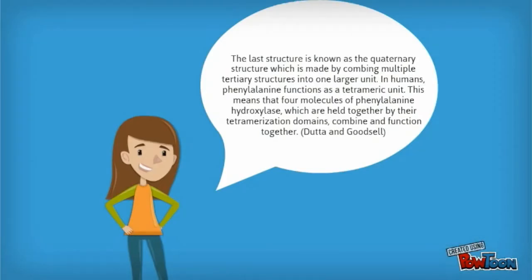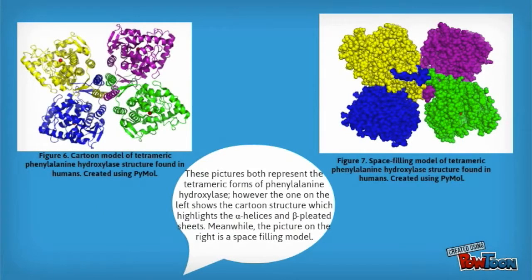The last structure is known as the quaternary structure, which is made by combining multiple tertiary structures into a larger unit. In humans, phenylalanine functions as a tetrameric unit. This means that four molecules of phenylalanine hydroxylase, which are held together by their tetramerization domains, combine and function together. These pictures both represent tetrameric forms of phenylalanine hydroxylase. However, the one on the left shows the cartoon structure which highlights the alpha helices and beta-pleated sheets. Meanwhile, the picture on the right is a space-filling model.